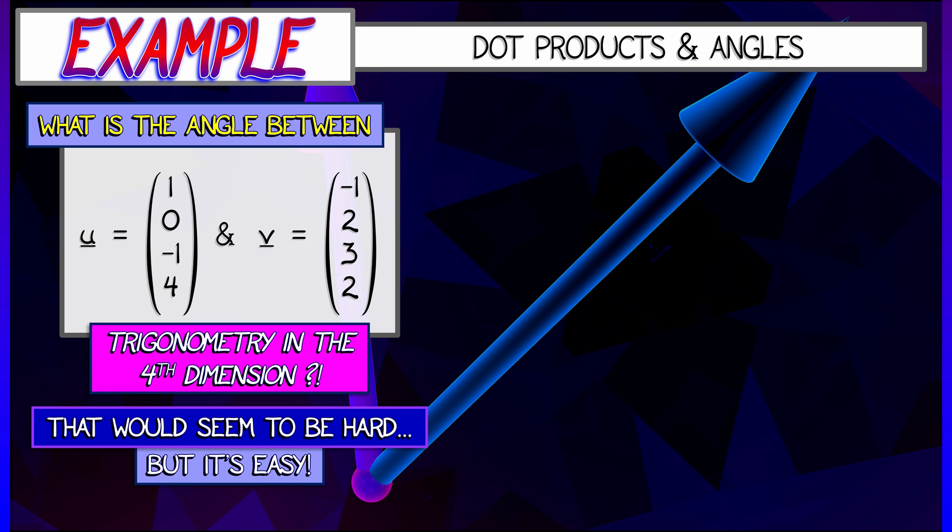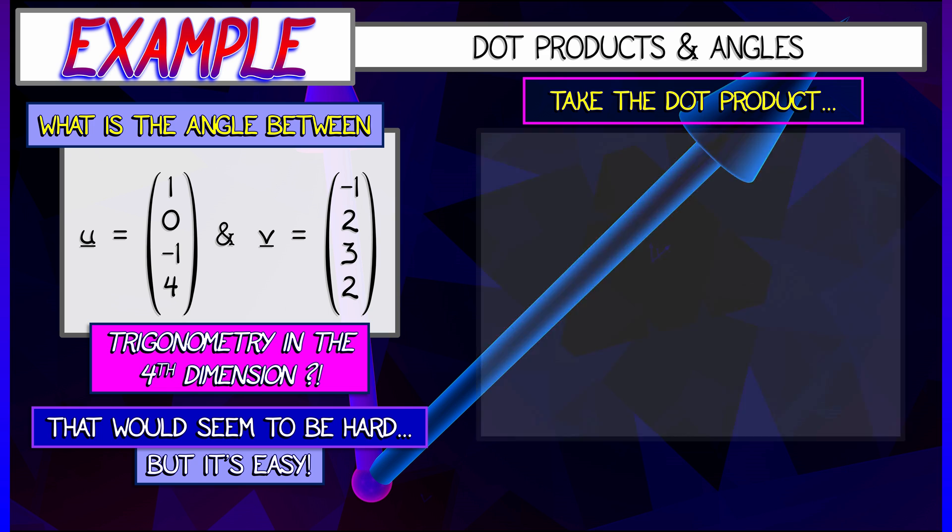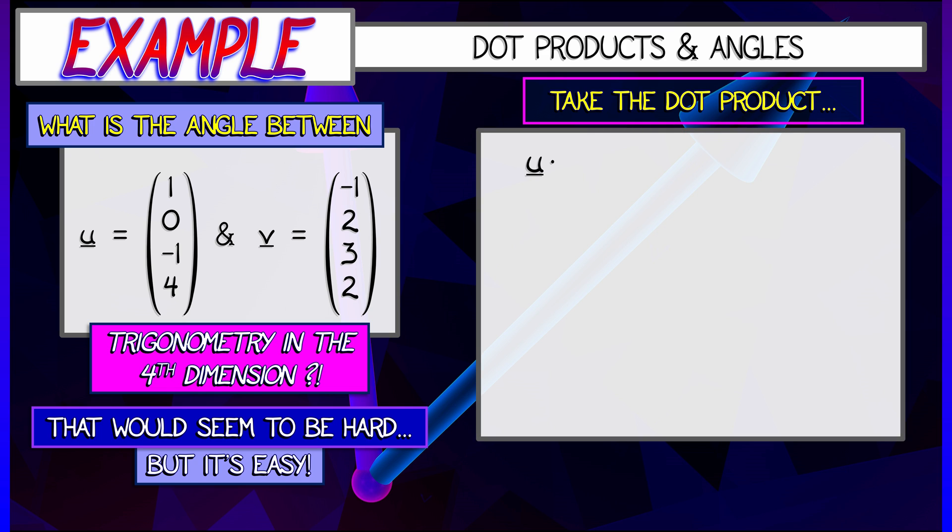These are vectors in R4. It would seem to be difficult to talk about angles in such a high-dimensional space, but we can do it, and it's so easy. Just take the dot product, u dot v, and use this formula.